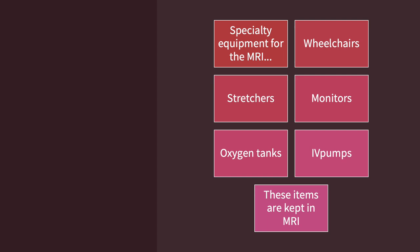The MRI safe specialty equipment include wheelchairs, stretchers, monitors, oxygen tanks, and IV pumps. They should be properly labeled as MR compatible and should always stay in the scan room. Note that these are very expensive and you don't want to lose them.